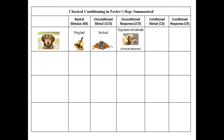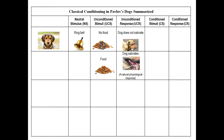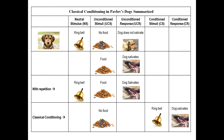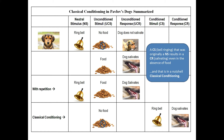Classical conditioning in Pavlov's dog summarized: the NS is ringing of the bell, there is no food given, and the dog does not salivate — a neutral response. Then you give the dog food, which is the UCS, and the dog salivates, a UCR. Then, with repetition of the bell ringing at the same time as the food, you get classical conditioning, where no food is given and the CS becomes the ringing of the bell and the CR becomes the dog salivating, even in the absence of food.